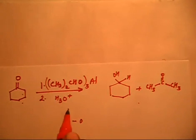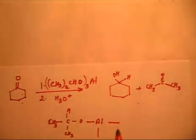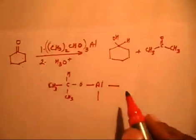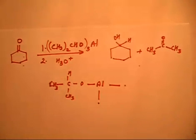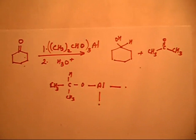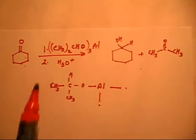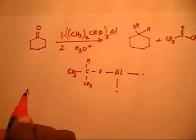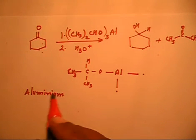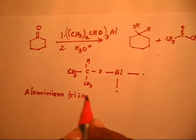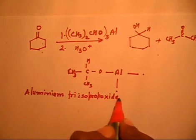The product has an OH group, and the structure shows aluminum bonded to the isopropoxide groups: Al–O–CH(CH3)2, with this same group attached multiple times. So if you have a ketone, it can be converted into an alcohol by this reagent, which is called aluminum tri-isopropoxide.